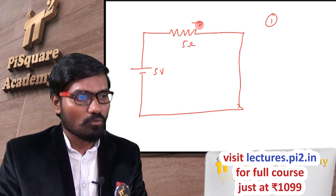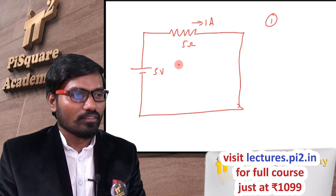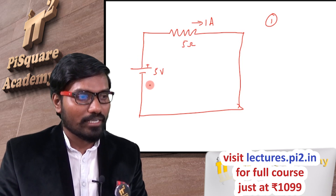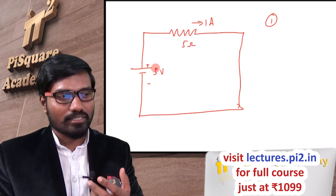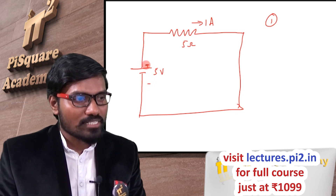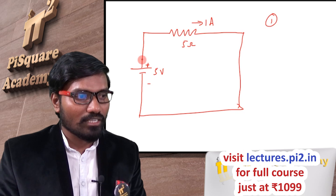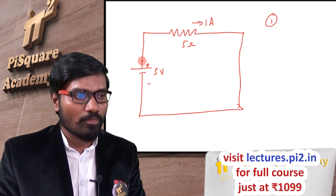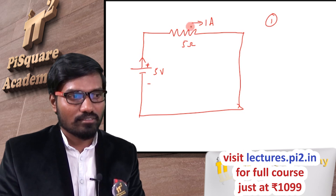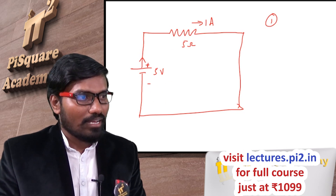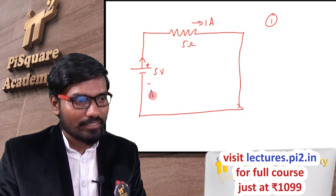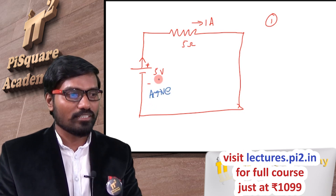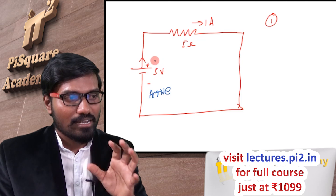Current of 1 ampere is flowing, and this is the positive plate and negative plate. What is meant by active element? From the positive plate, current will leave. So current is leaving from the positive plate — this 5 volt source is acting as an active element.